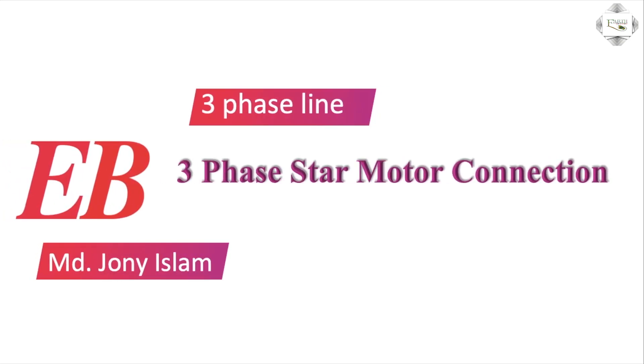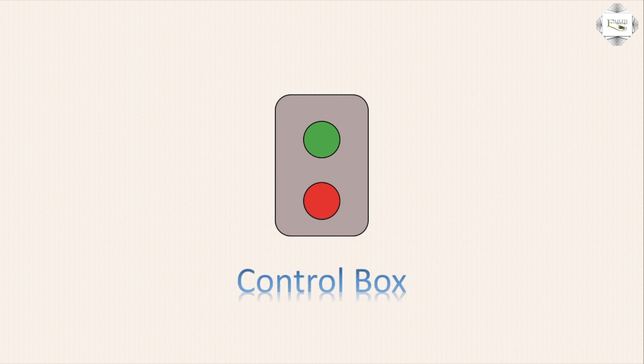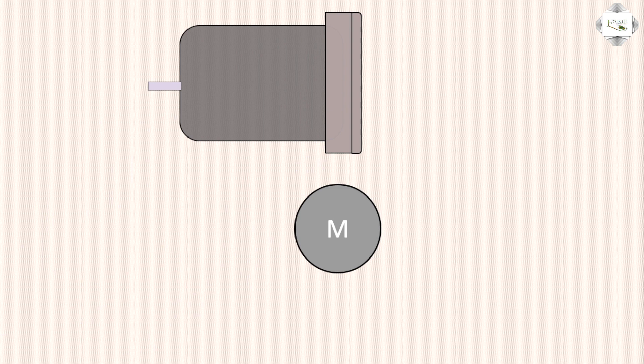Hello viewers, today I discuss the three-phase line three-phase star motor connection full diagram. First, the control box - control box switches, start switch and stop switch. Control box using two switches for industrial three-phase motor.